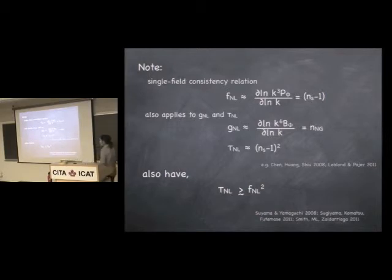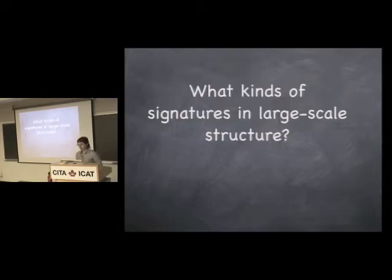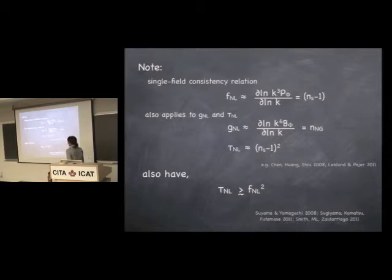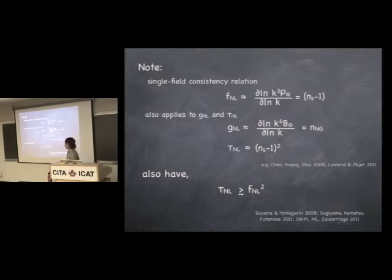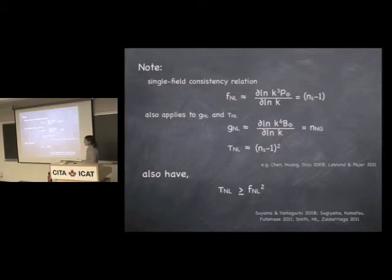It's also important to notice that the single-field consistency relation — that for single-field inflation f_NL must be vanishingly small — also applies to g_NL and tau_NL. If these parameters were measured to be very large, it would call into question single-field inflation. And there are other consistency relations governing how tau_NL should compare to f_NL squared — this is the Suyama-Yamaguchi inequality, shown in the delta-N formalism. We actually have a short paper with Kendrick showing that this statement must be true — it doesn't depend on inflation, it's just a statement about math, coming from a Cauchy-Schwarz inequality.